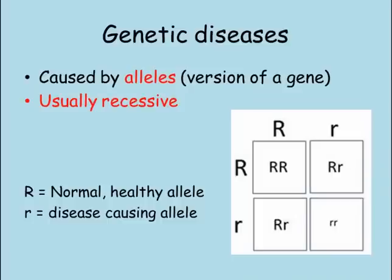The first type of disease we will look at are genetic diseases. These are caused by the combination of alleles that the person has inherited from their parents. Most genetic diseases are recessive, meaning you need to inherit two copies of the disease-causing allele to have the disease. If you have one healthy allele and one disease-causing allele, you are a carrier. This means you are healthy but you are able to pass on the allele that could cause the disease to your offspring.